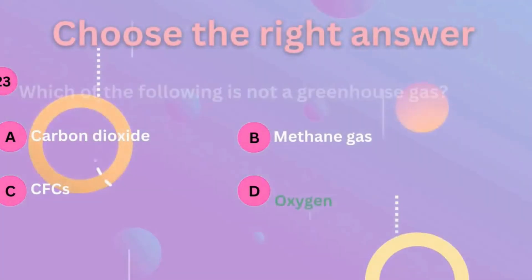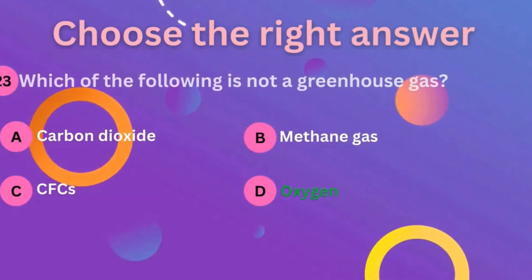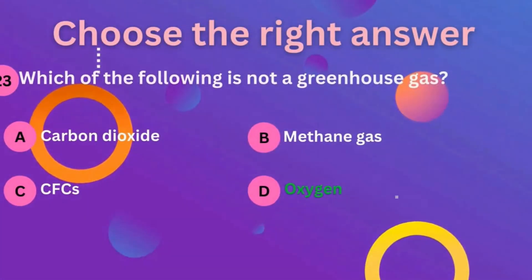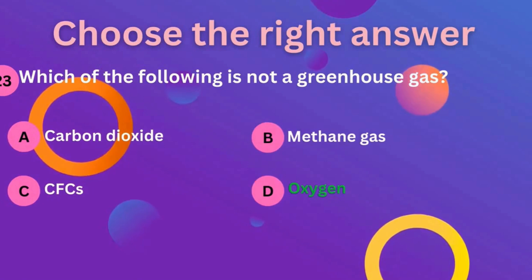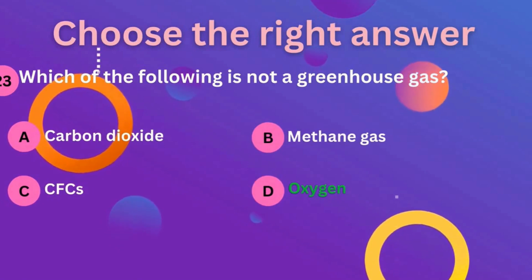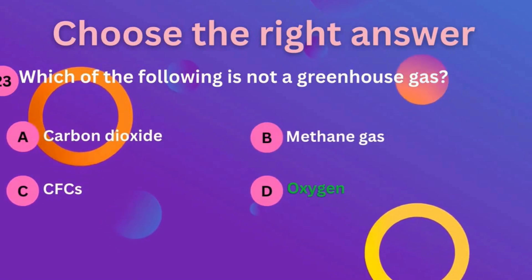Question number 23: which of the following is not a greenhouse gas? Oxygen is not a greenhouse gas. So D is the correct answer.